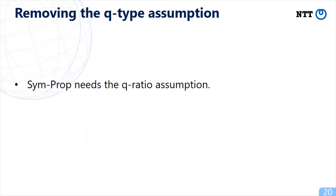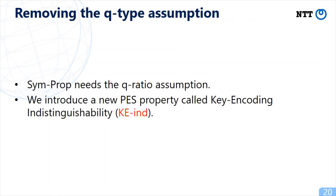As long as we rely on the symbolic property, we need a Q-type assumption to prove the security of ABE schemes. To take a similar strategy, we introduce a new property for pair encoding schemes called key encoding indistinguishability, or KEIND for short.